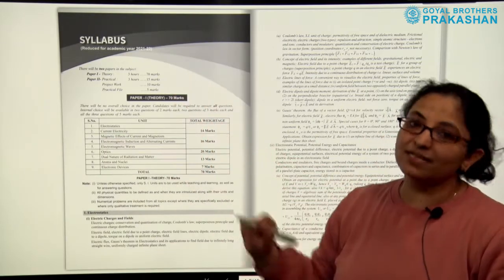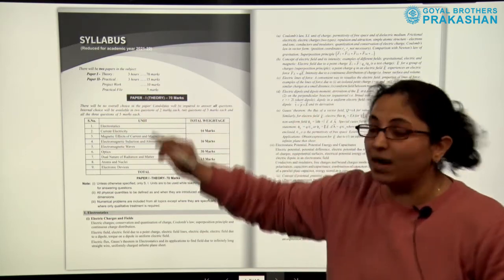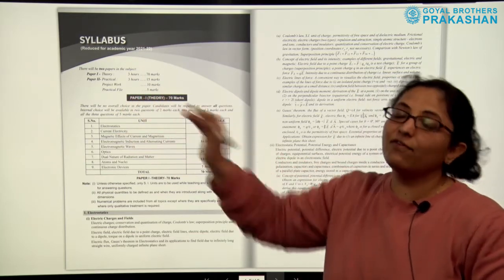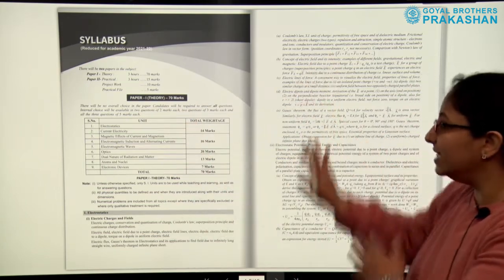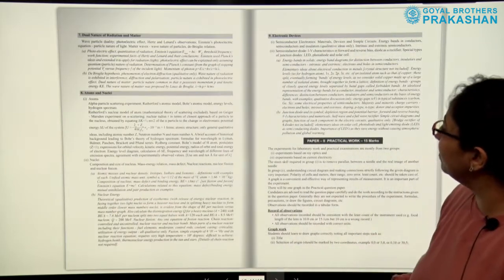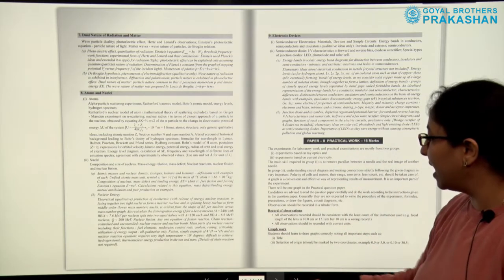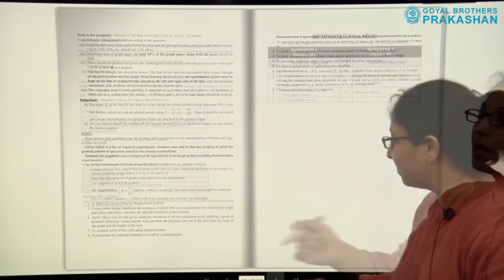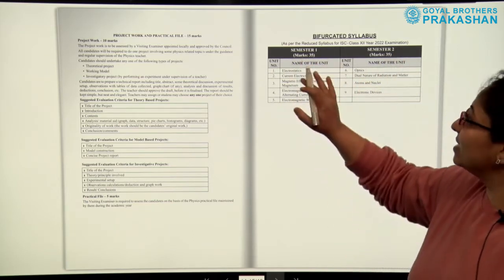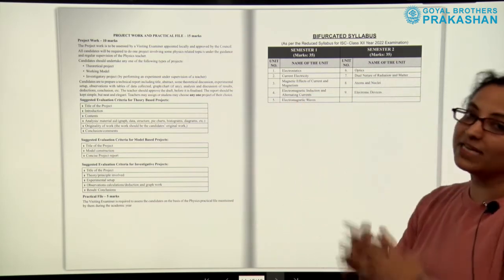We start with the syllabus. There are two types of papers: Paper 1 which is theory for 70 marks, and Paper 2 which is practical for 15 marks. Project work is for 10 marks and practical file for 5 marks. The complete theory syllabus is provided at the start, followed by the Paper 2 practical syllabus. After that we have the bifurcated syllabus for Semester 1 and Semester 2, each for 35 marks.